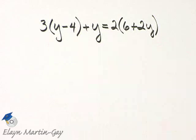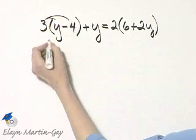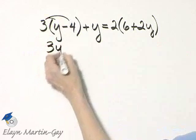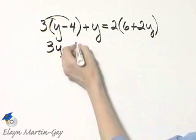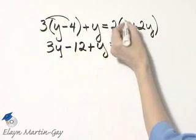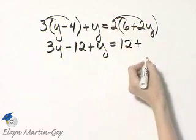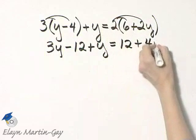There are parentheses, so let's multiply by using the distributive property. That's 3 times y, which is 3y, minus 3 times 4 is 12, and then plus y is equal to 2 times 6 is 12, plus 2 times 2y, that's 4y.